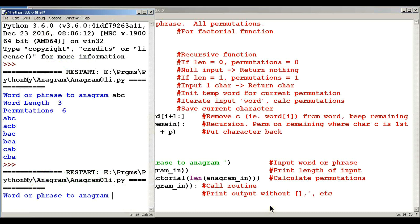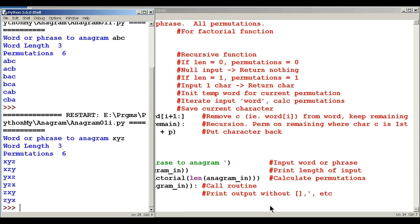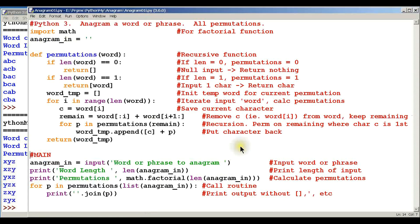Word or phrase to anagram. I did ABC before, let's say XYZ, and there we have it. It's length 3, permutations 6, so it did all the possible permutations.